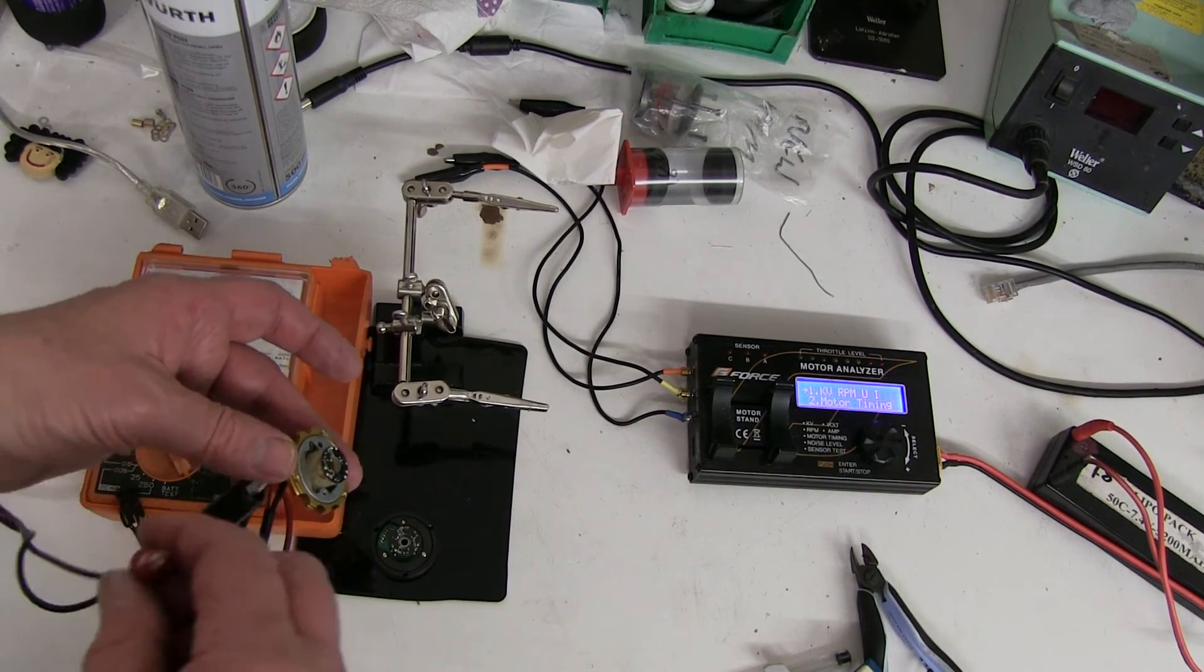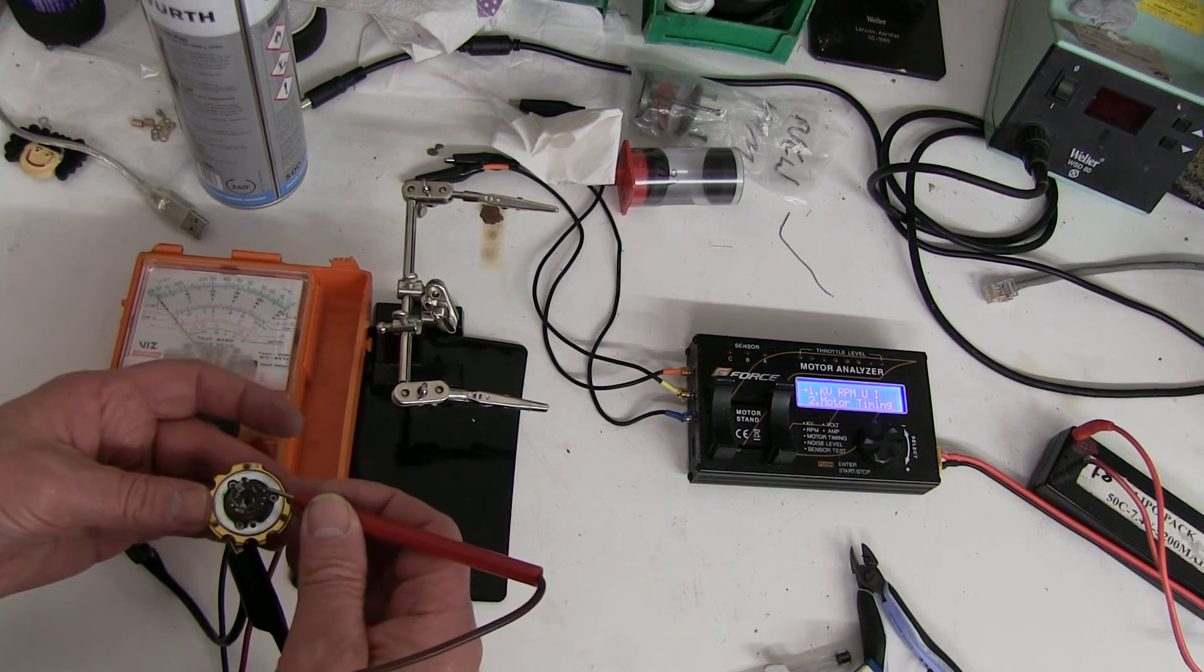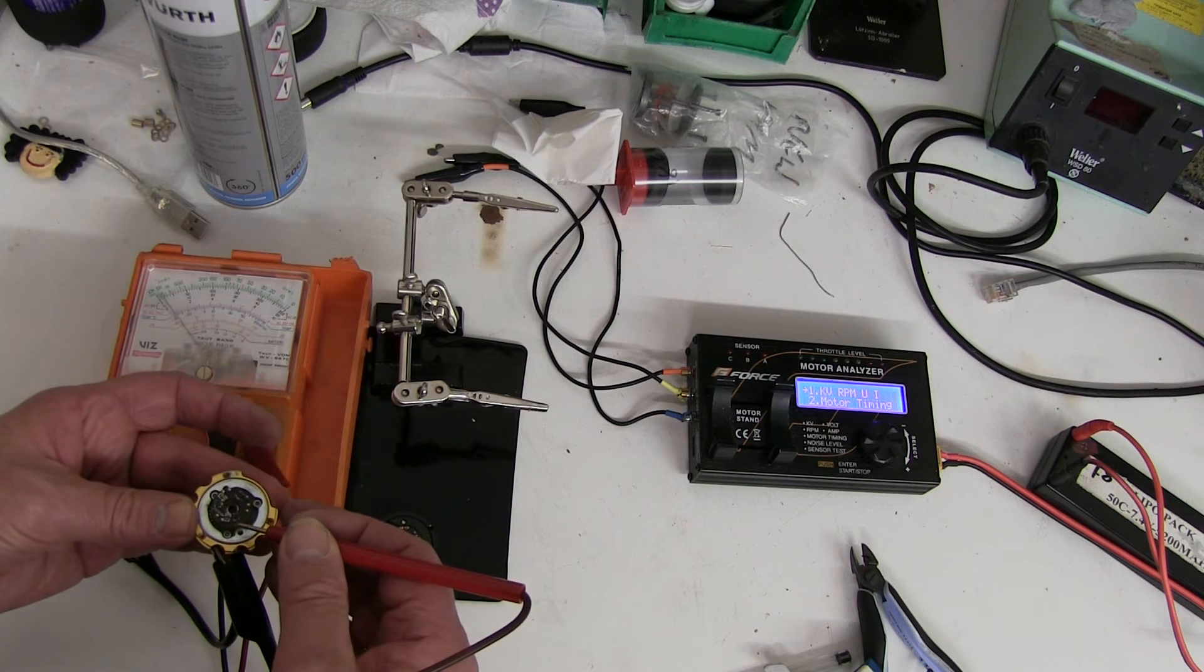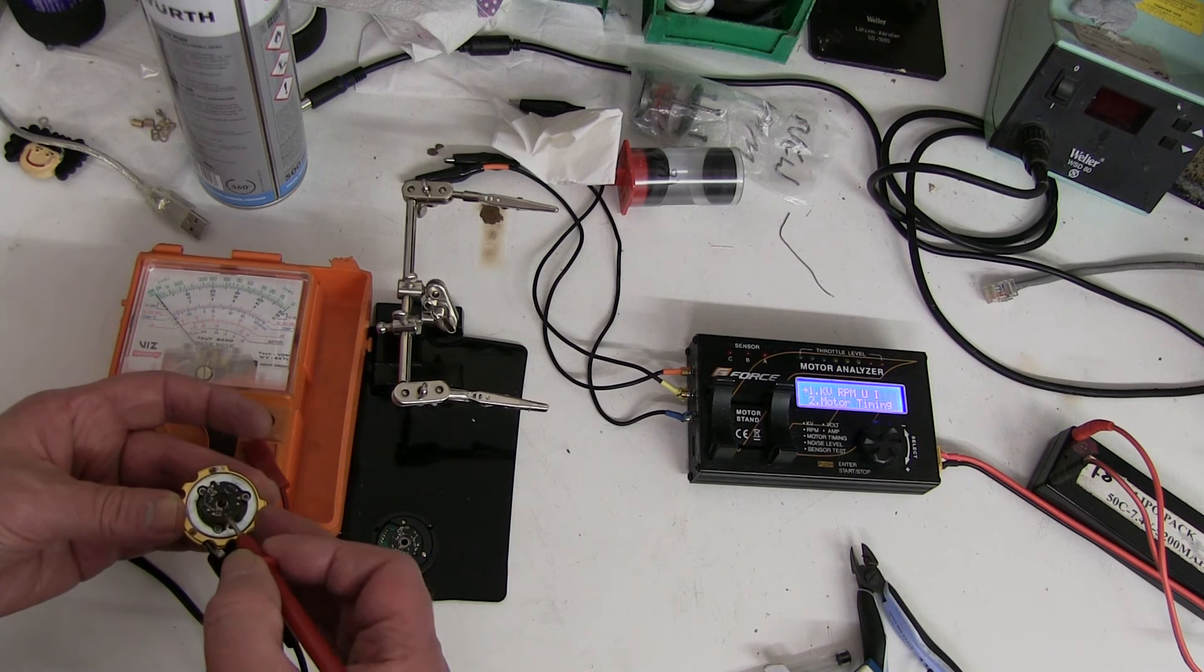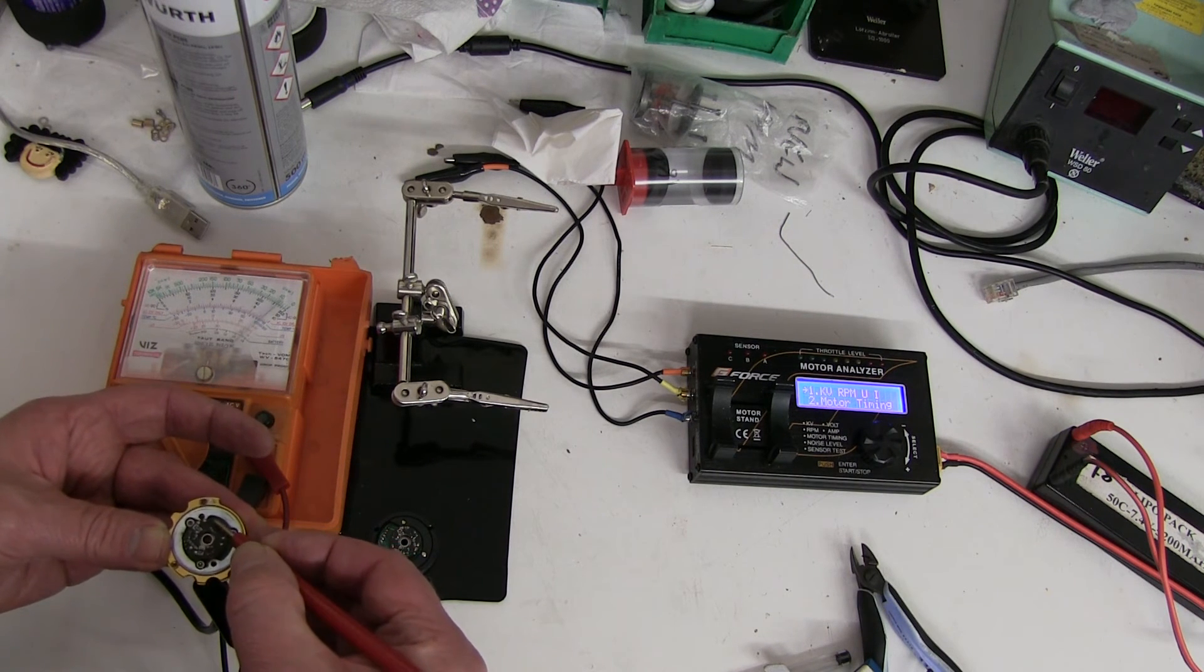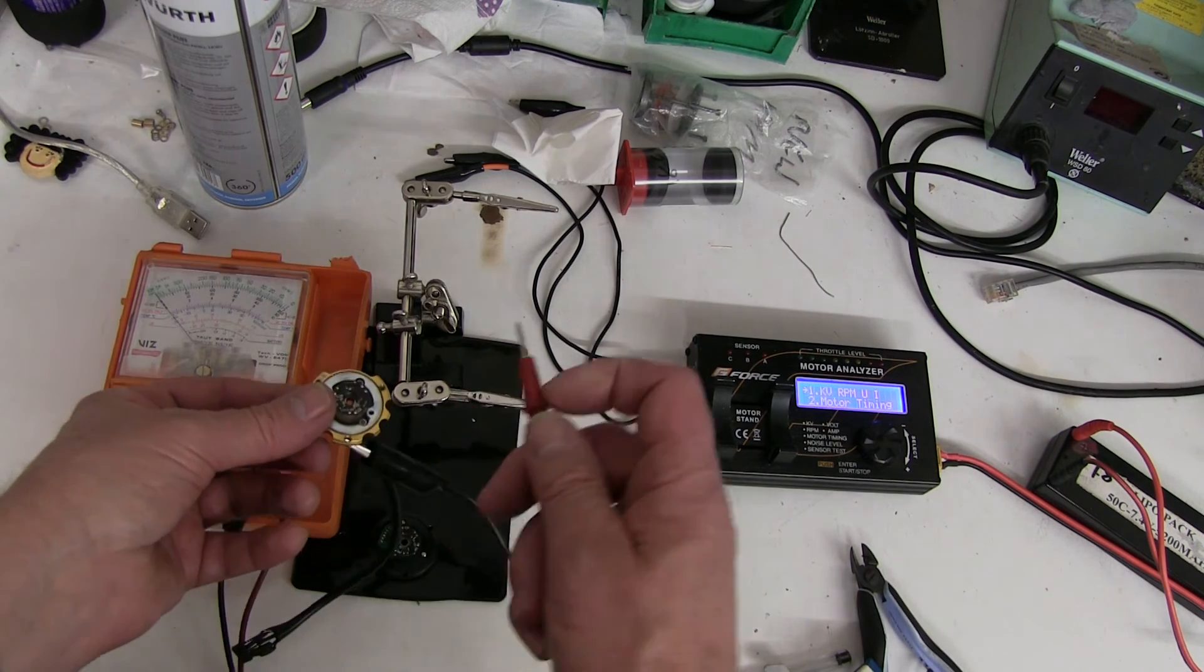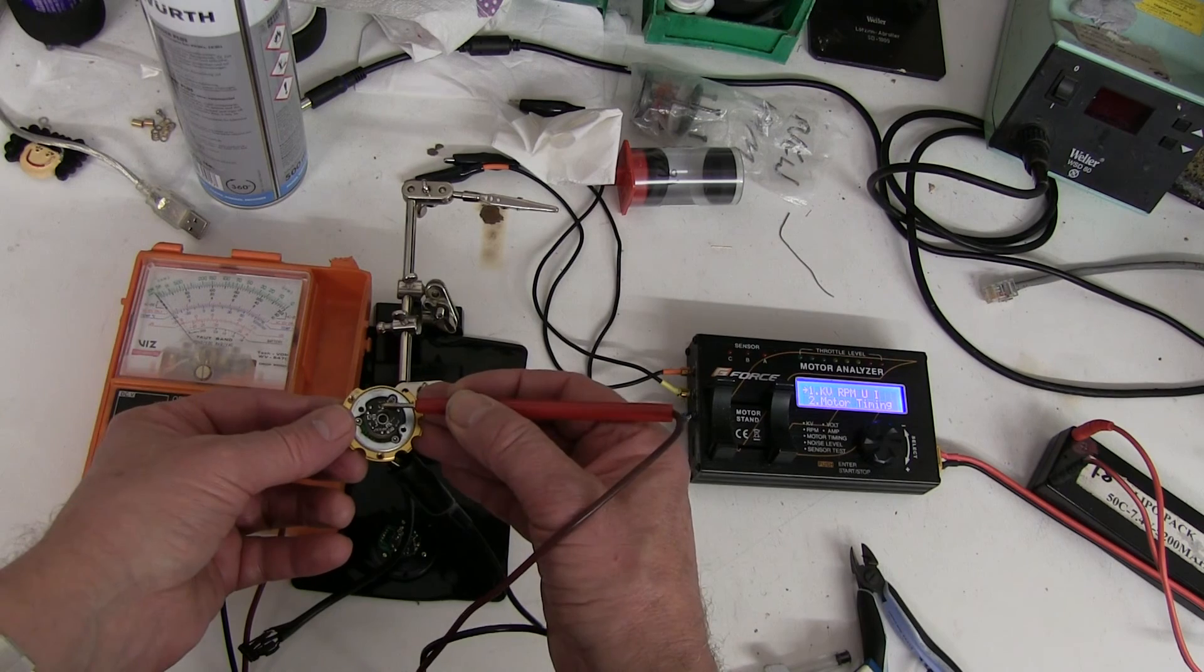That one goes up—that's the one you're looking for. If you check the other two hall devices, this one shows nothing, but this one goes up, so you know that's C. Then that one is A, and that one is B.